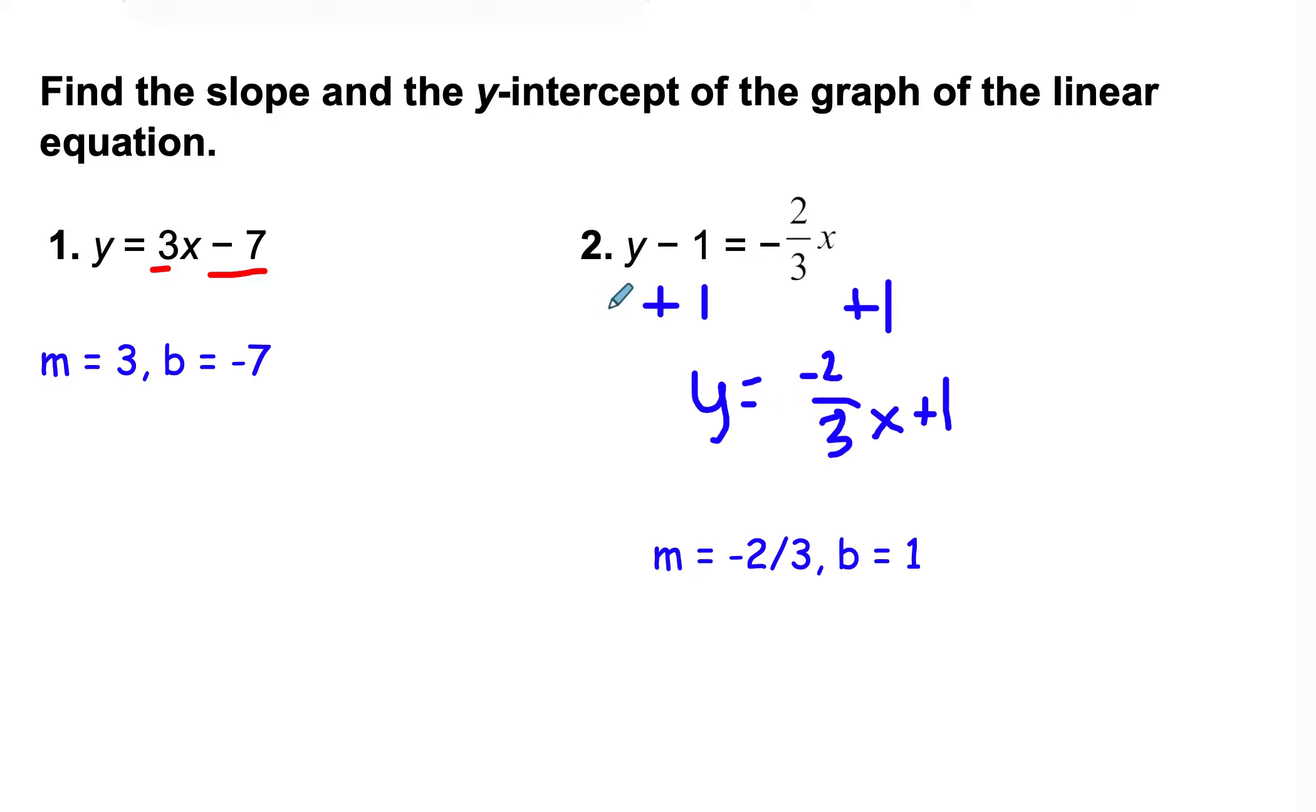For number 2, you had to solve it. y minus 1 equals negative 2 thirds x. Get rid of a minus 1 with a plus 1. Negative 1 plus positive 1 is 0, leaving you with just the y. Negative 2 thirds x plus 1, they're not like terms, you can't add them, you just write them together. Now that I have my equation, I look for my coefficient for x. Negative 2 thirds is my slope. My other number not with the x is my y-intercept, and that's 1.